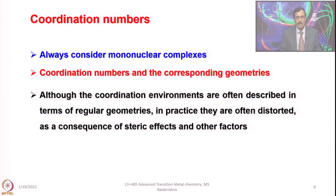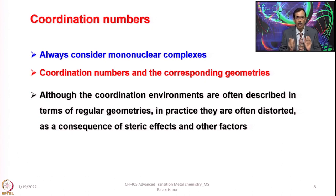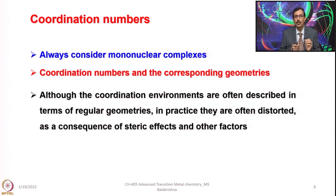Let us now look into coordination numbers. Always consider mononuclear complexes when deciding coordination numbers, and the corresponding geometries should be examined. For example, coordination number 2 gives linear geometry; coordination number 3 gives trigonal planar geometry. I shall elaborate more when we go to valence bond theory and bonding concepts. Although coordination environments are often described in terms of regular geometries, for coordination number 4, the number alone can only tell you whether the geometry is tetrahedral or square planar.